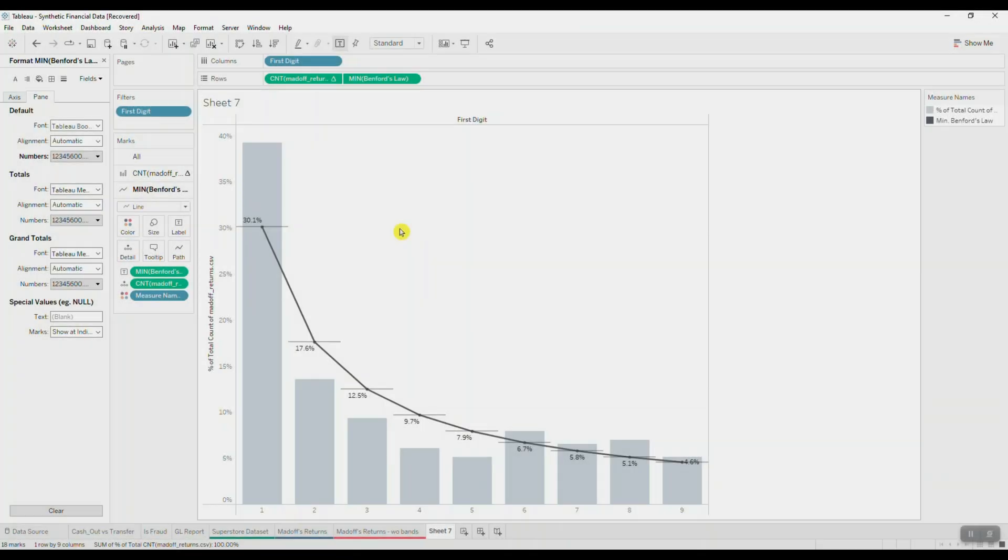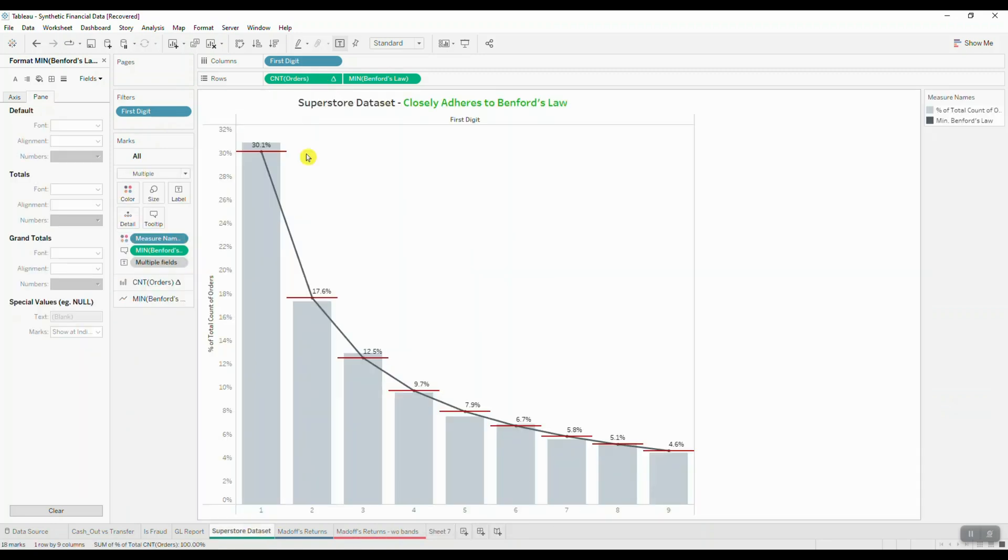Right away you may notice that this distribution looks a little bit different than what we saw by looking at our superstore data set. Let's just jump back here for a quick second. Here we can see that our actual frequencies are really close to our predicted frequencies and we get a nice smooth distribution.